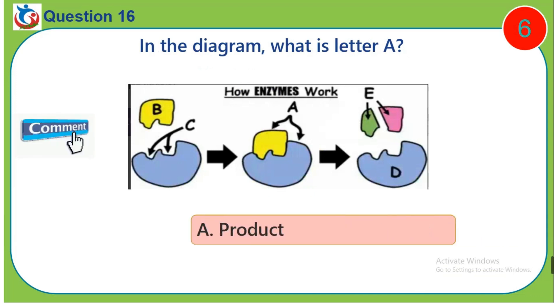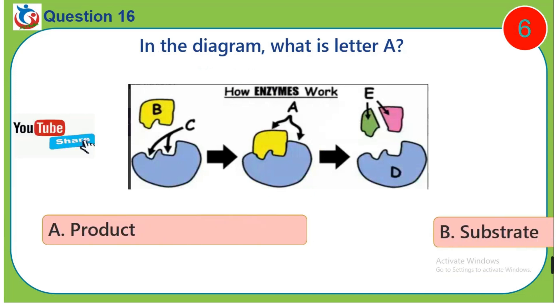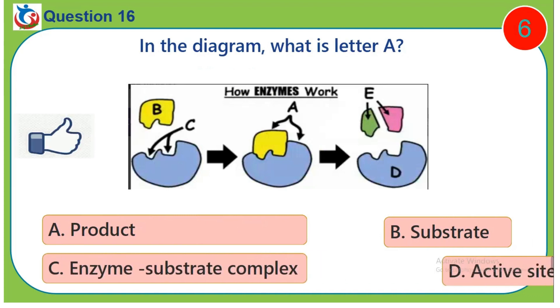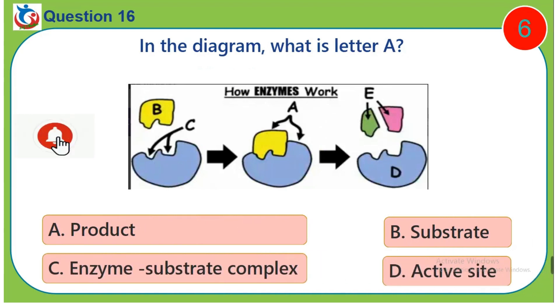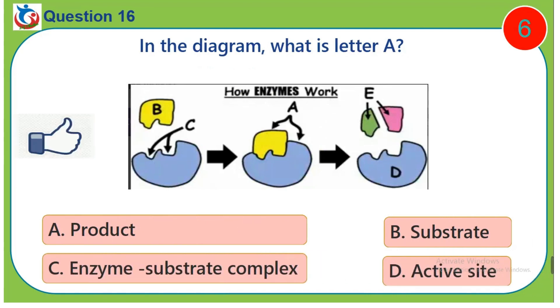Question 16. In the diagram, what is letter A? A. Product. B. Substrate. C. Enzyme substrate complex. D. Active site.